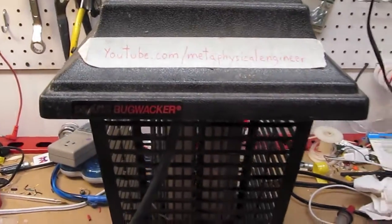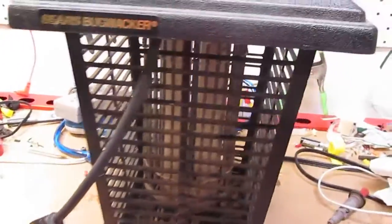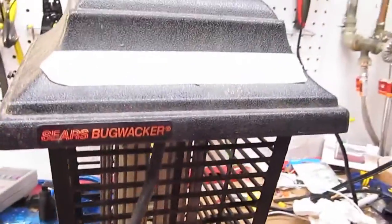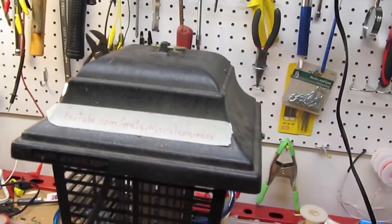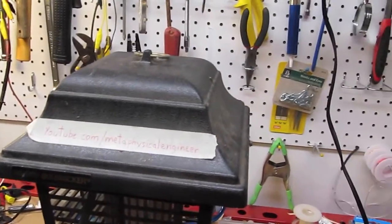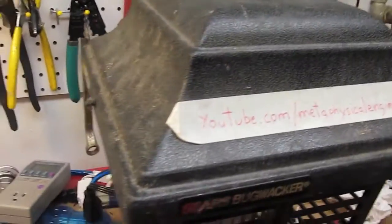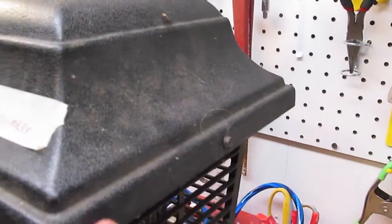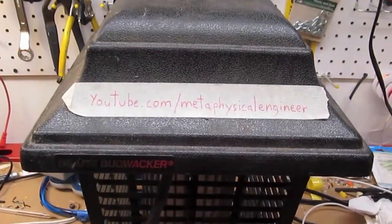Here I have a dusty, dirty Sears Bug Whacker insect zapping lamp. I know this one had a bad starter when I found it in a dumpster, probably why it was thrown out. So I just chopped off the starter and manually started it. I'm going to unscrew this top lid, expose the internals, then maybe plug it in, fire it up, and possibly play around with the zappy part.